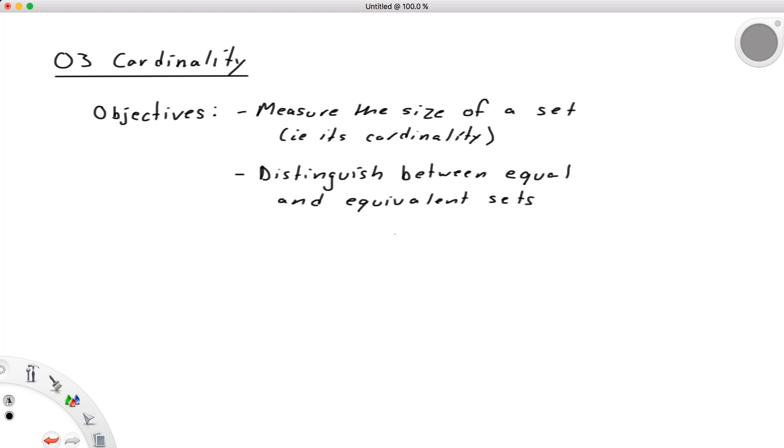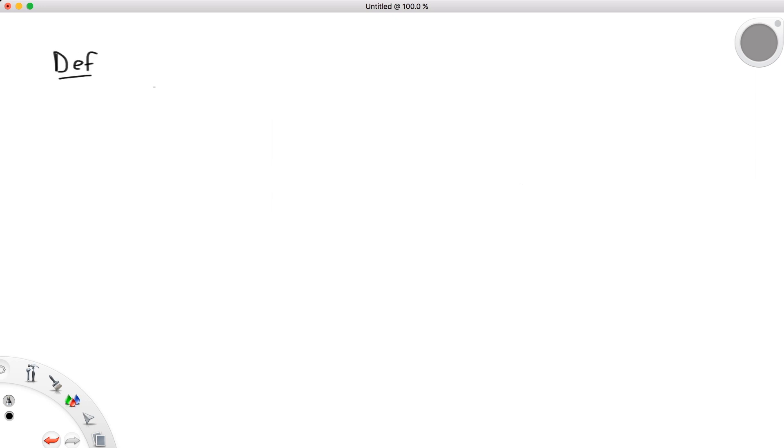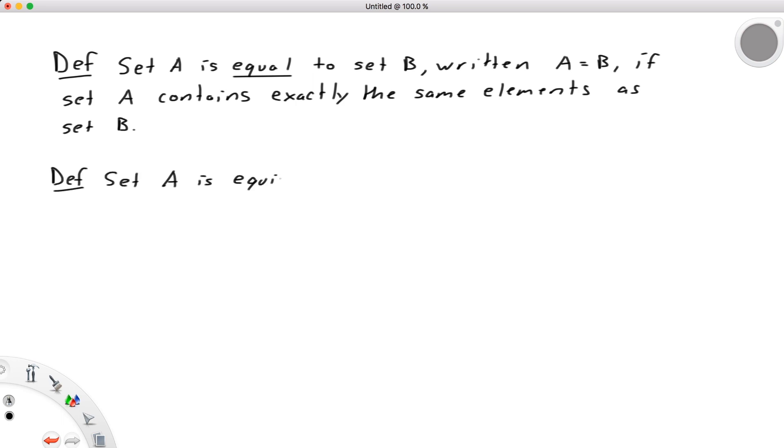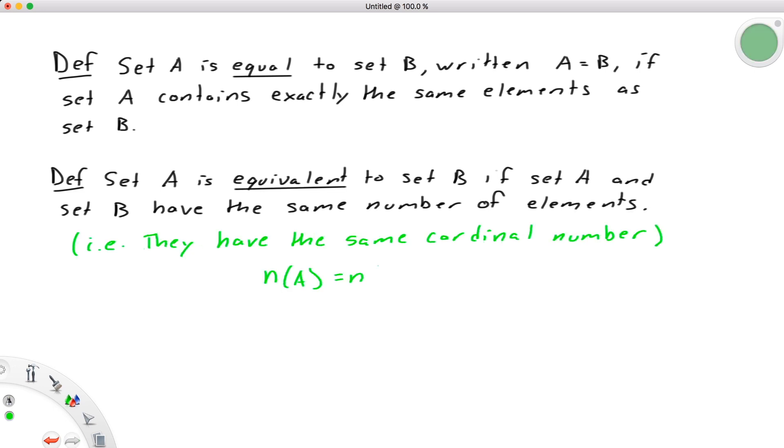When we say two sets are equal, we mean they are quite literally exactly the same. They have exactly the same elements. We say set A is equal to set B, written A = B, if A contains exactly the same elements as B. Equivalent, on the other hand, only refers to the set's size. Specifically, set A is equivalent to set B if set A and set B have the same number of elements. In other words, they have the same cardinal number, n(A) = n(B).